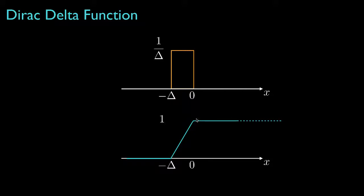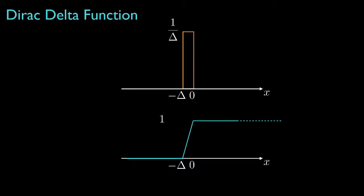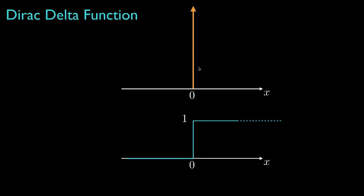Now if we decrease delta, we'd get something that looks like this. The pulse would get more narrow and the cumulative distribution function would rise more quickly. In the limit of very small delta, we might represent the pulse with an upward pointing arrow and the cumulative function would be a unit step function. We call this unit area pulse the Dirac delta function and we use the Greek symbol delta to denote it.